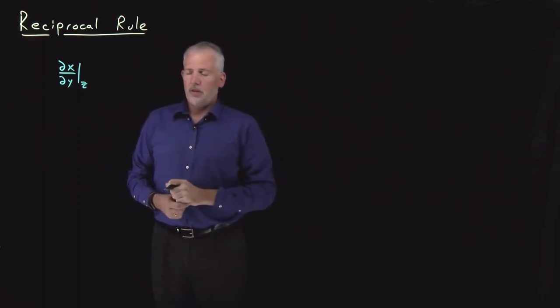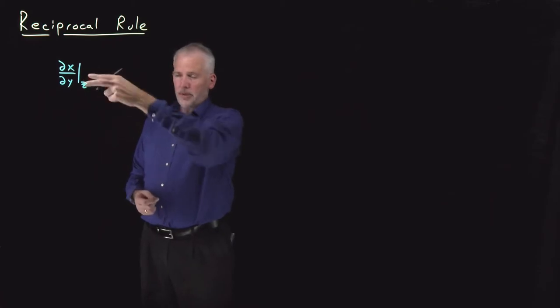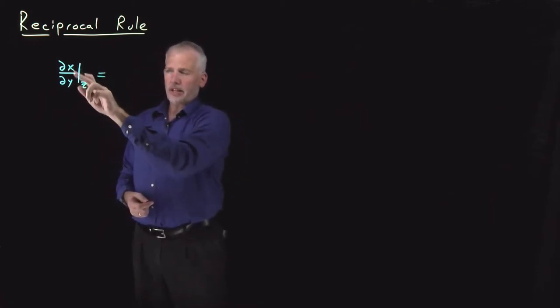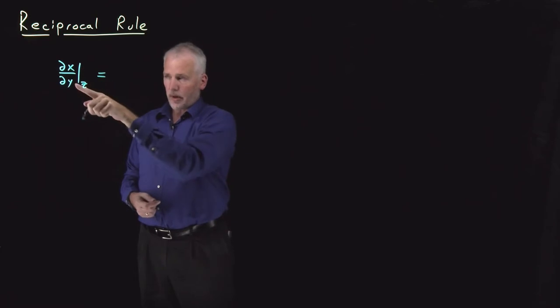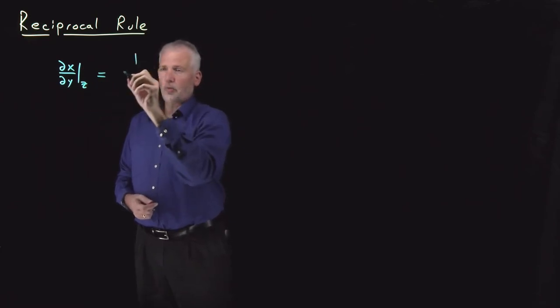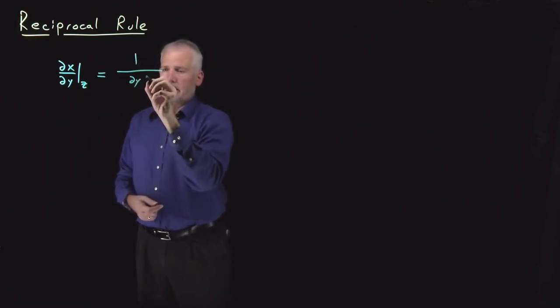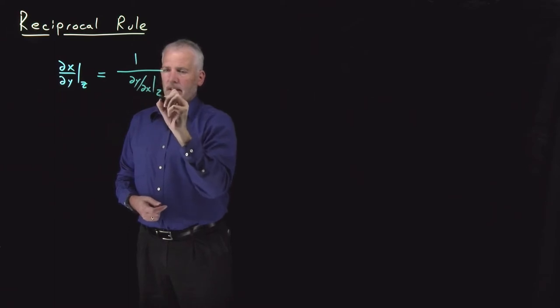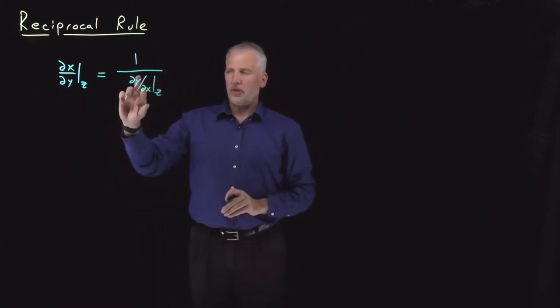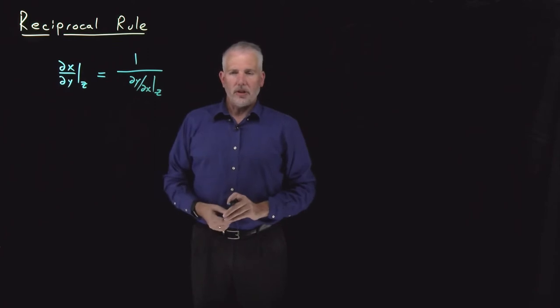...it's the reciprocal of the upside down of that partial derivative. That partial derivative dx dy at constant z is just 1 over dy dx at constant z. When I take the reciprocal, I just exchange the numerator and the denominator.